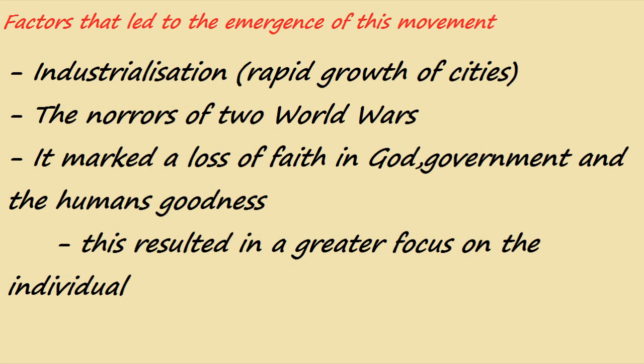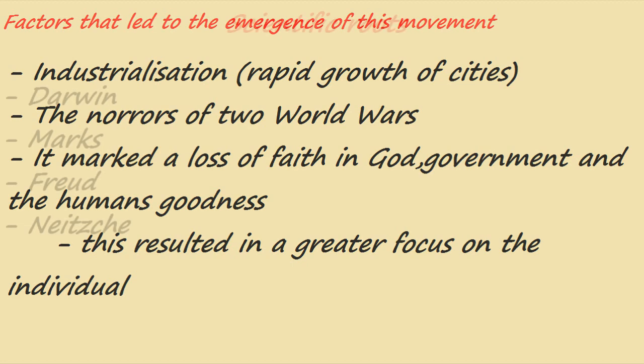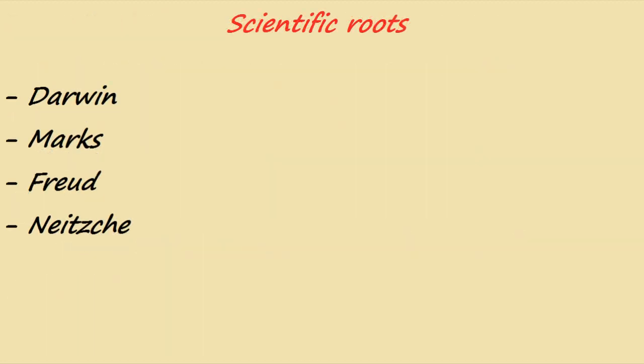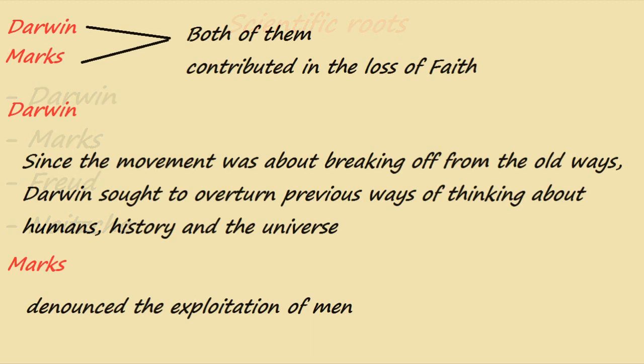Now we move to the scientific roots. When we talk about the scientific roots, we mainly need to talk about Darwin, Karl Marx, Freud, and Nietzsche. These four scientists and thinkers contributed to the emergence of this movement — they prepared the ground for modernism to emerge. Darwin and Karl Marx both contributed to the loss of faith.